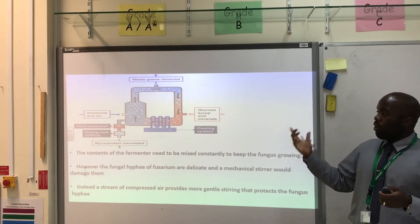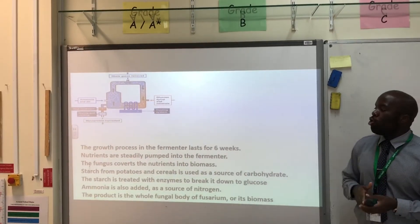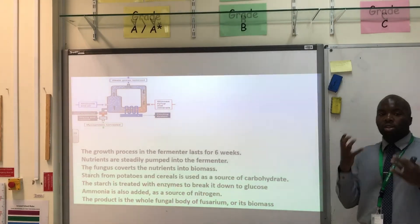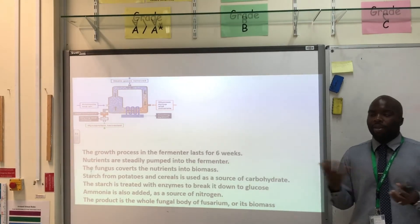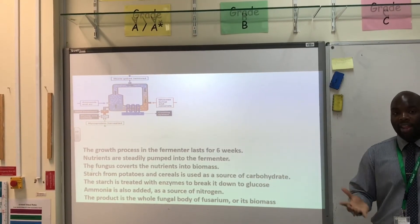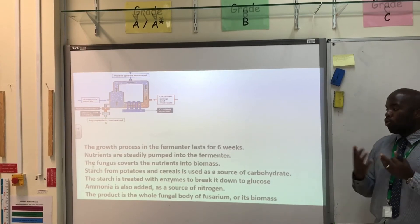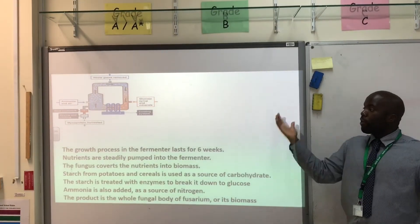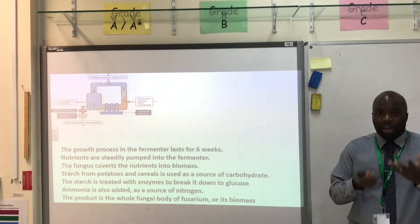The air mixes the Fusarium and keeps it circulating until it's ready. The whole growth process takes about six weeks, and nutrients are steadily pumped in. In order for this micro fungus to grow, it needs glucose. We get starch from potatoes or cereal — these are cheap sources, making the whole process economically friendly. We treat the starch with enzymes that break it down into glucose, which is then added to the fermenter. Ammonia is also needed because the Fusarium fungus requires a source of nitrogen to grow. The end product is the fungal body — the Fusarium biomass — which we use as meat.